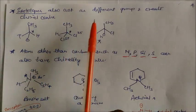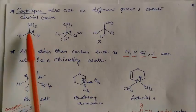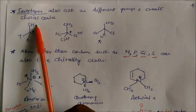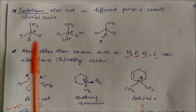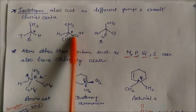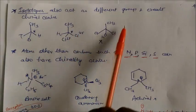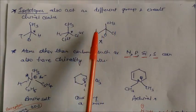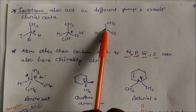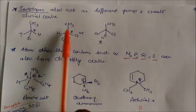Isotopes also act as different groups and create chiral centers. For example, hydrogen, deuterium, tritium, and any other group attached to a carbon — this is a chiral carbon. Again, there are two different isotopes of chlorine: Cl-35 and Cl-37. So this is again a chiral carbon. But this one is not chiral, because these two Cl atoms are the same isotope attached to the same carbon. So this is not chiral, but these two are chiral.